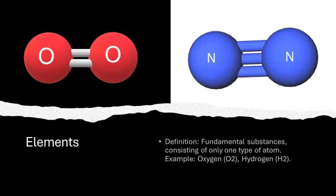Elements, akin to the smallest puzzle pieces of matter, are indivisible and unique. Each element, such as oxygen or hydrogen, consists of only one type of atom. This section will illustrate how these fundamental building blocks lay the groundwork for the diversity of matter.